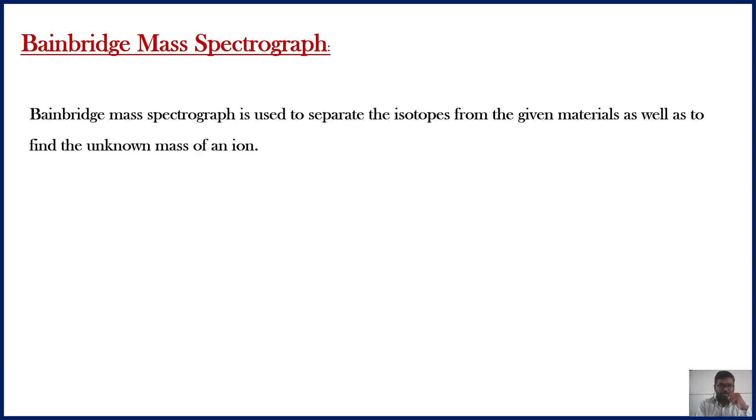Bainbridge is the name of a scientist and the Bainbridge mass spectrograph is used to separate the isotopes from a given material. Also, the Bainbridge mass spectrograph is used to find the unknown mass of an ion.